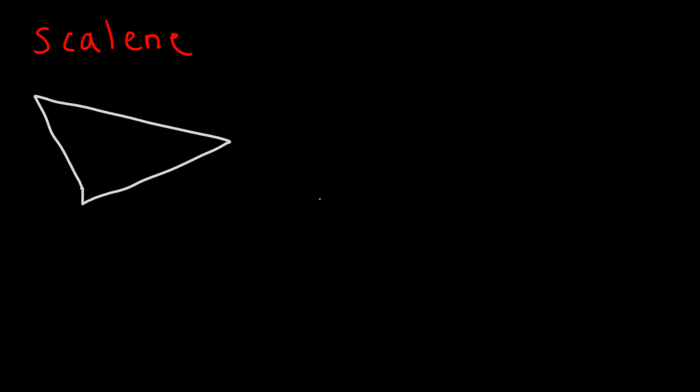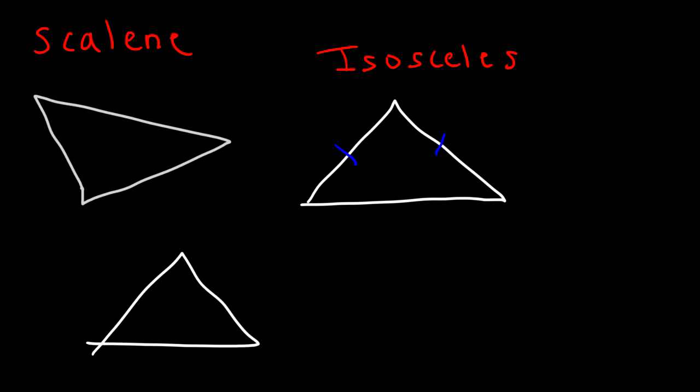The next triangle is the isosceles triangle. In the isosceles triangle two sides are congruent to each other. The next one that you need to be familiar with is the equilateral triangle. All three sides are congruent.